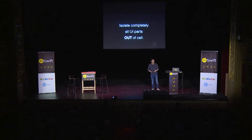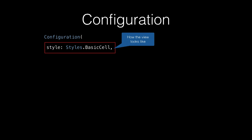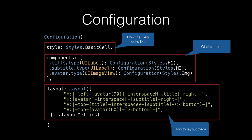The idea is simple: we isolate completely every UI part out of the cell, which makes our cell totally generic. Instead, we put all UI parts into an object called a configuration, and let the configuration do the rest. This configuration object has a style for itself, the components within it, and a layout part.